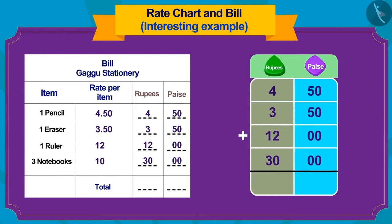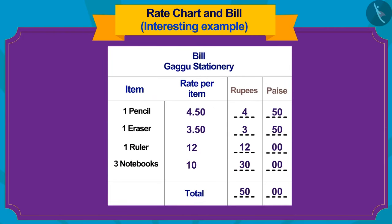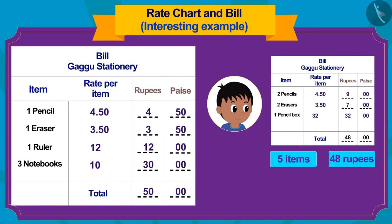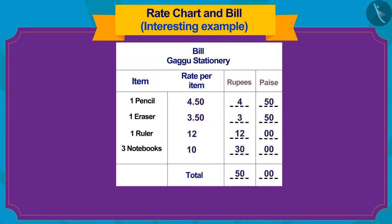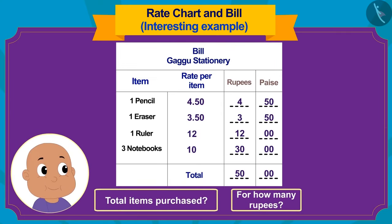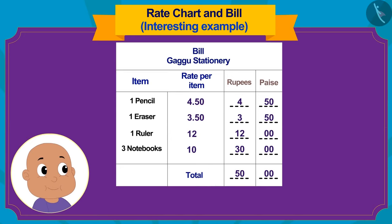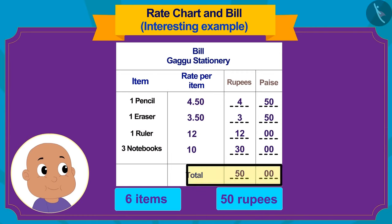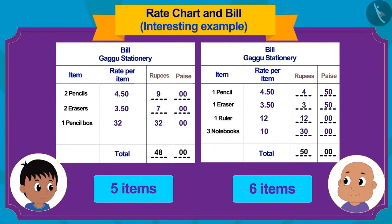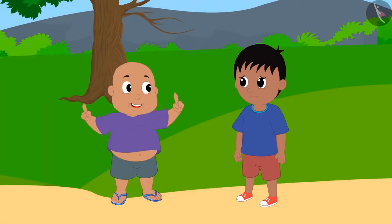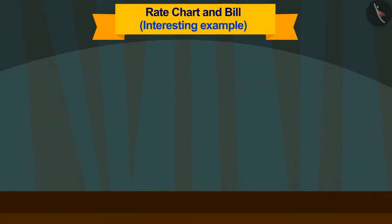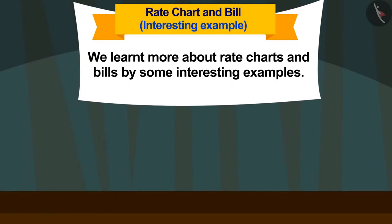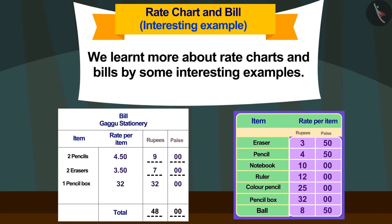Well done, kids! You have done it perfectly! Raju bought a total of 5 items for 48 rupees. Bablu bought 6 items for 50 rupees. In this way, Bablu won the bet — and see how he is happily dancing! Children, in this video we learned more about rate charts and bills with some interesting examples.